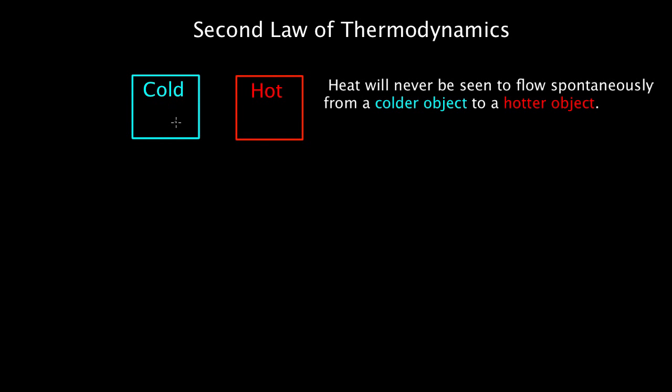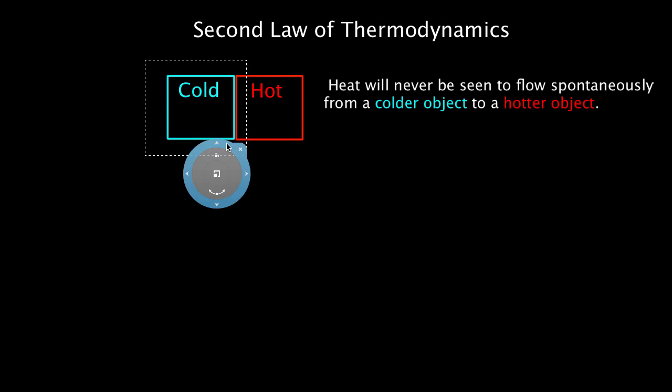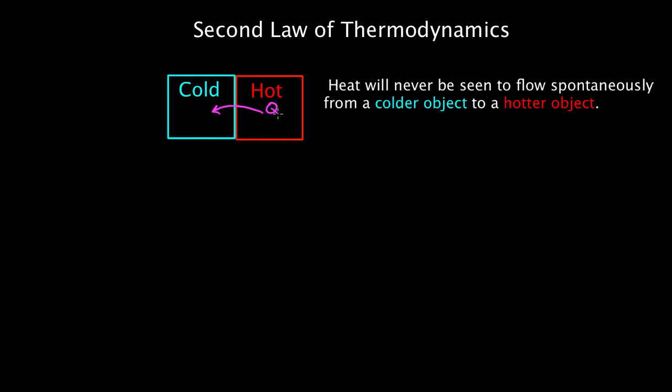Let's start with one of the most common ways to state it, which is if you've got a cold object and a hot object, heat will never be seen to flow spontaneously from a colder object to a hotter object. So if you have these two sitting together, maybe an ice cube and a hot piece of metal, and you make them touch, heat's going to flow between them, but we know what's gonna happen. The heat's gonna flow from the hot object to the cold object and never the other way, at least not spontaneously.